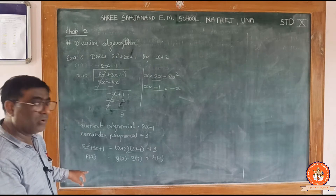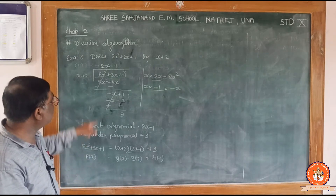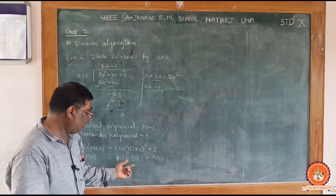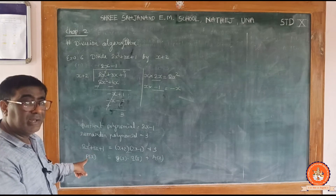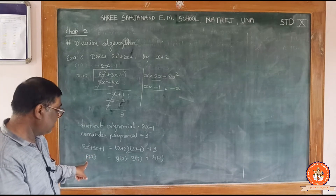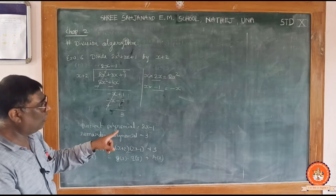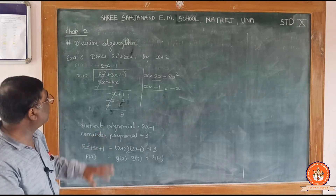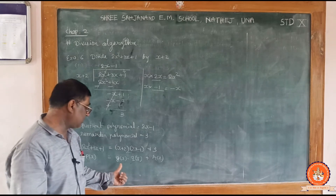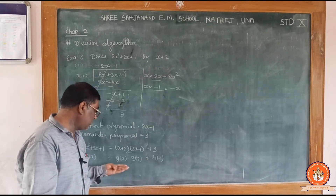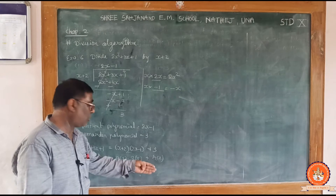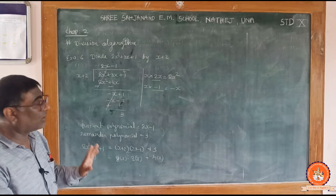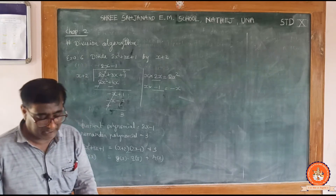You can verify this: multiply the divisor and quotient, then add the remainder, and you will get the dividend polynomial. This verification process is called the verification of the division algorithm.